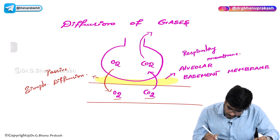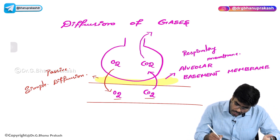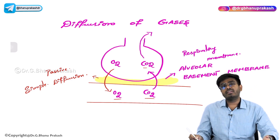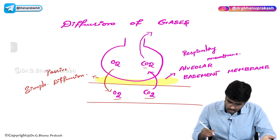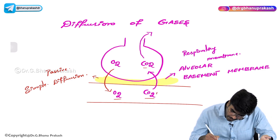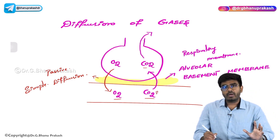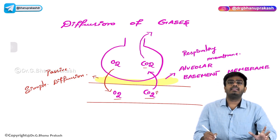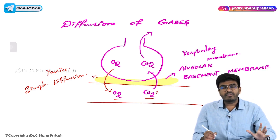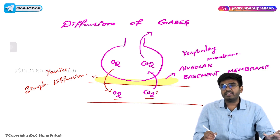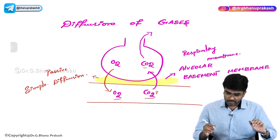In the same way, carbon dioxide in the deoxygenated blood has high partial pressure, and carbon dioxide in the alveolus is almost zero. So carbon dioxide is also moving from high partial pressure to low partial pressure. Remember: exchange of gases is always simple diffusion - there is no need for any ATP, no transporter or channel required.